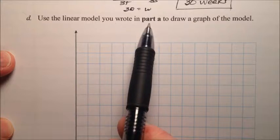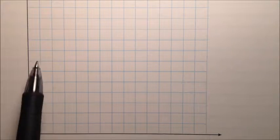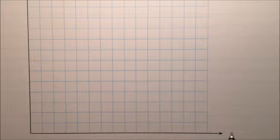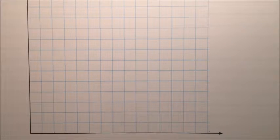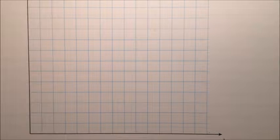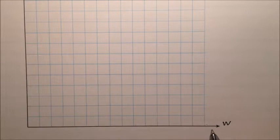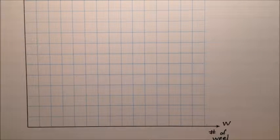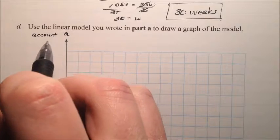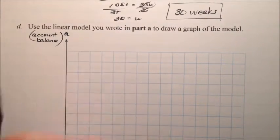In part d, we're going to use this linear model that we wrote in part a and graph it. So we have this nice graph grid here, and there should be 15 by 15. So our x-axis here has to do with our independent variable, which we said was W, weeks, so I'm going to put W right there. This is number of weeks. Likewise, our y-axis was the account, or we can say account balance, and that's going to be our y-axis, or in our case, the a-axis.